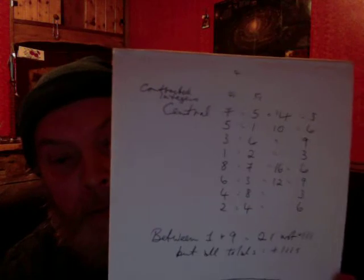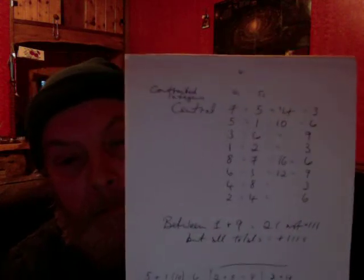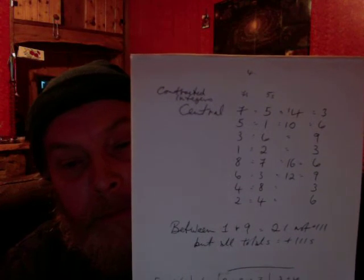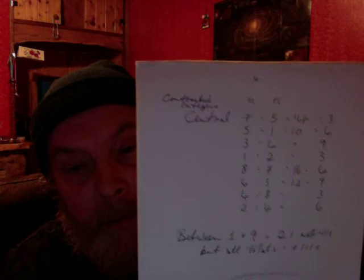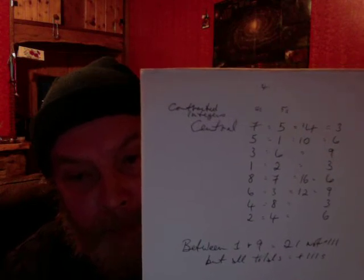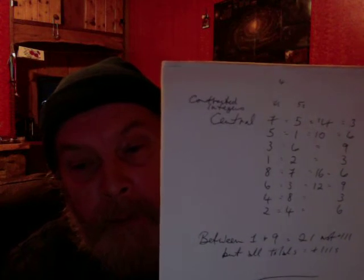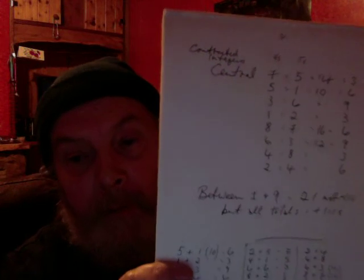That's the same if you just go 1, 2, 3, 2, 3, 4 — the outer values will always be double the central value. We can see a list of the way that the central values are also giving you the contracted runs. So 7 gives you 5 because it's 14, and 5 gives you 1 because it's 10. And again, it will add together to 3, 6, 9, or 6 — whichever way you're doing it.